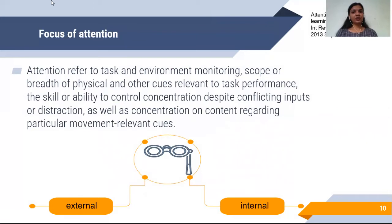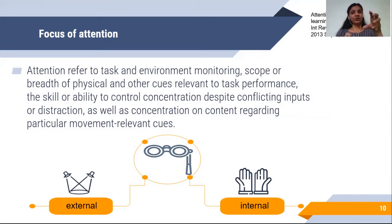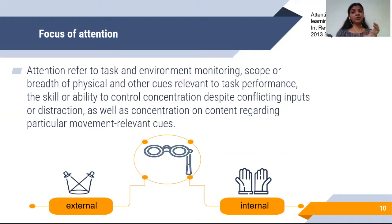The next factor is focus of attention. Attention refers to task and environment monitoring, scope and breadth of physical and other cues relevant to task performance, as well as the skill or ability to control concentration despite conflicting inputs or distractions. Focus of attention can be divided into two parts: external and internal. In external focus, we focus on the outcome or goal to be achieved. In internal focus, we focus on the movement of the body needed to achieve the task. We will perform a small activity to understand this.